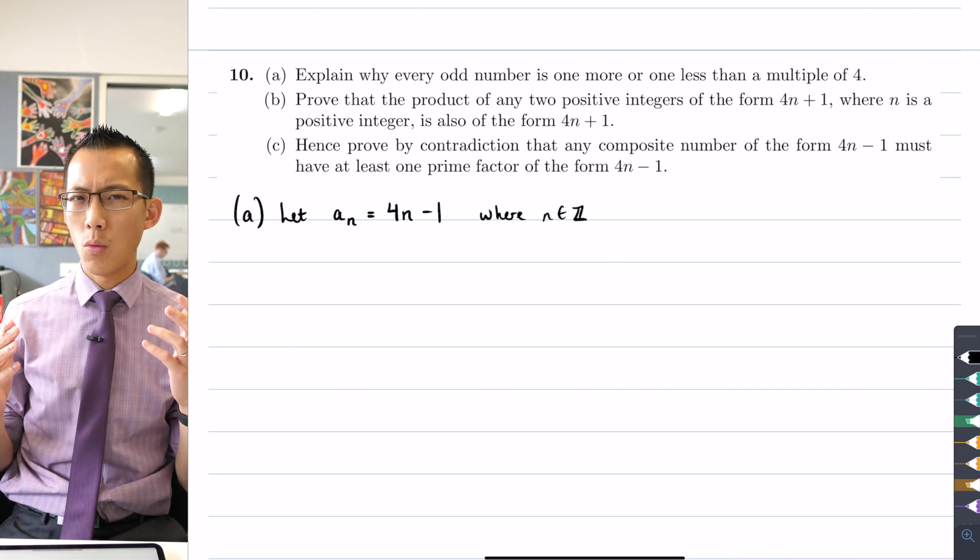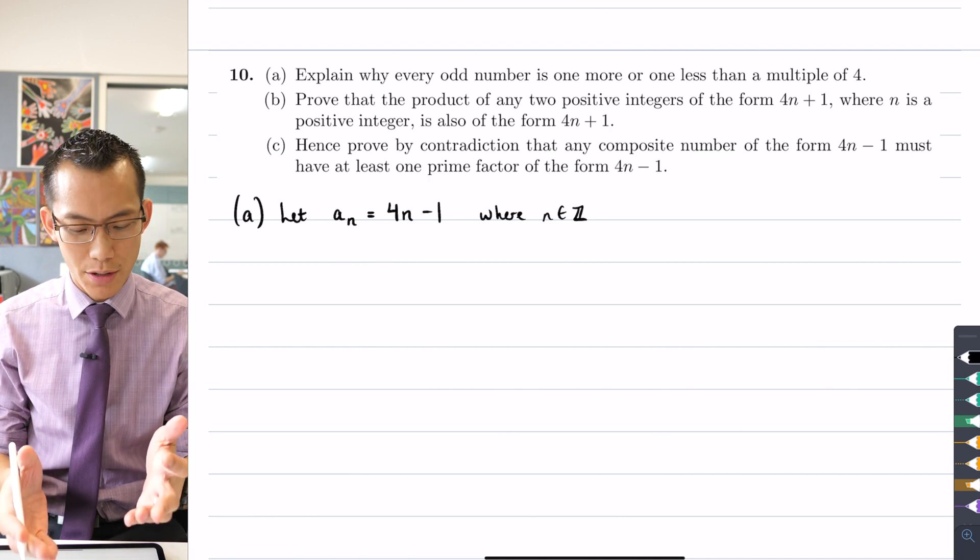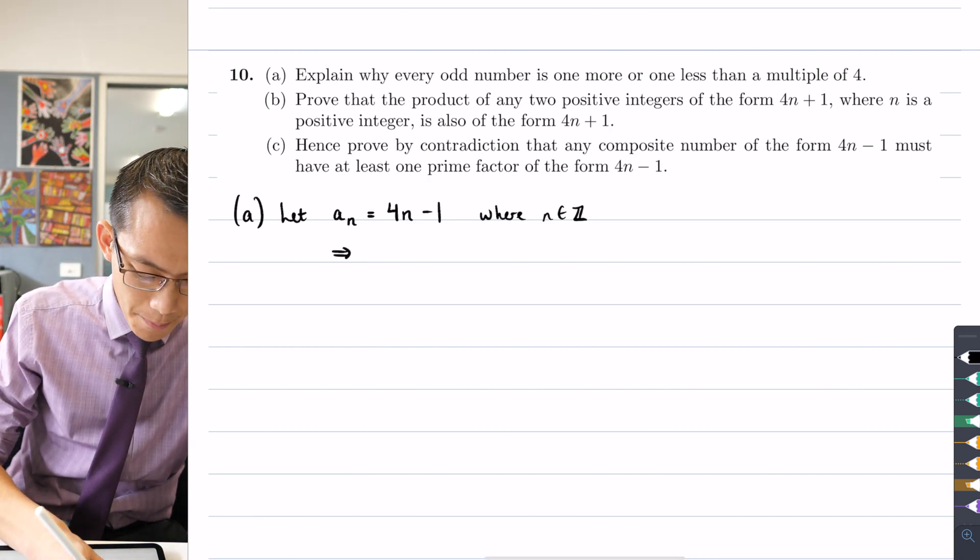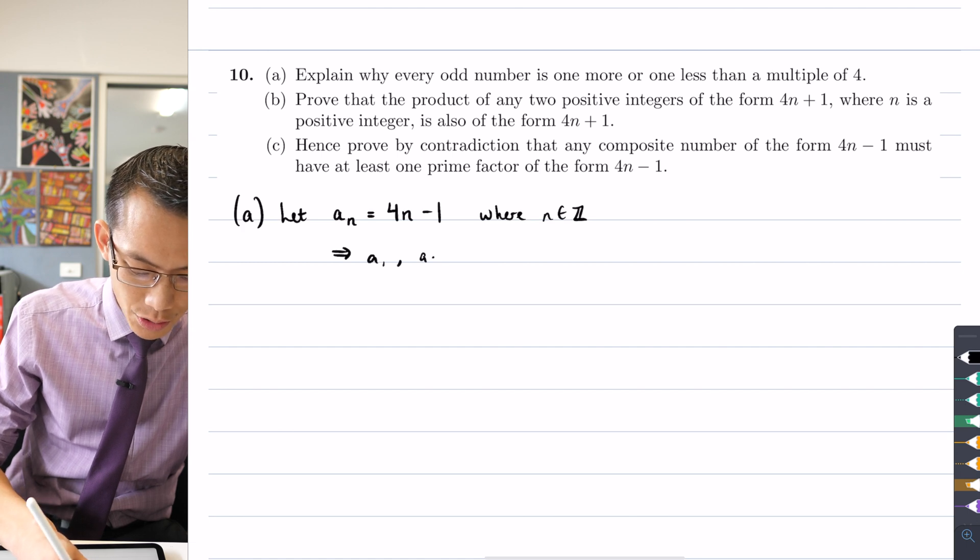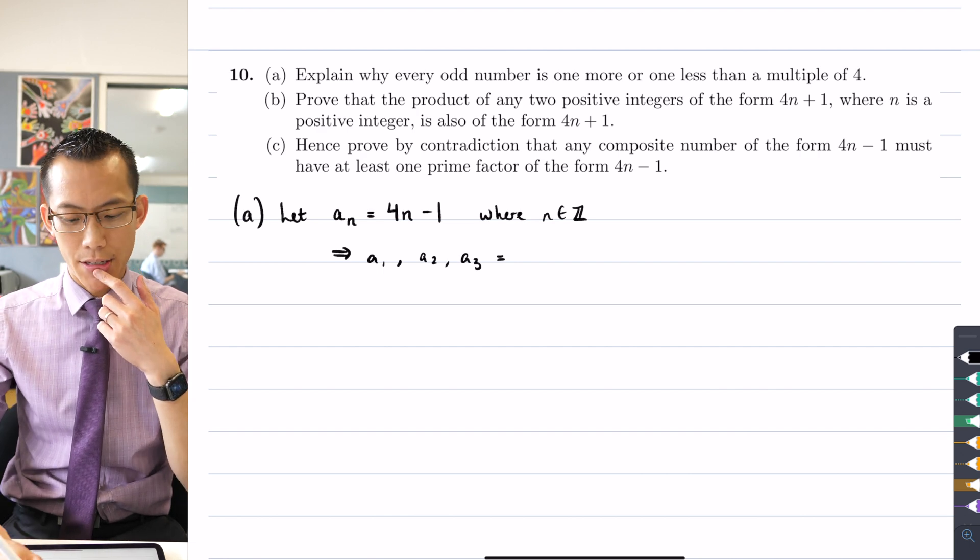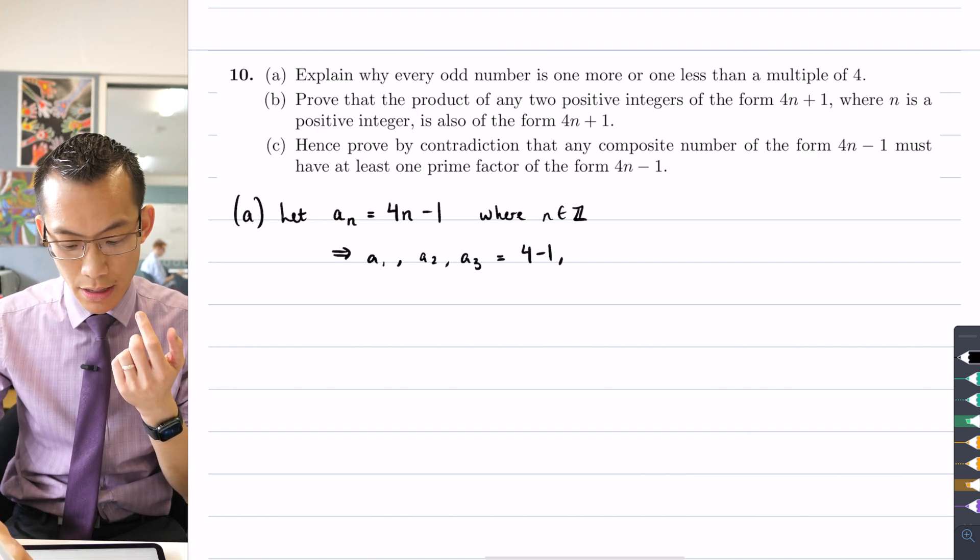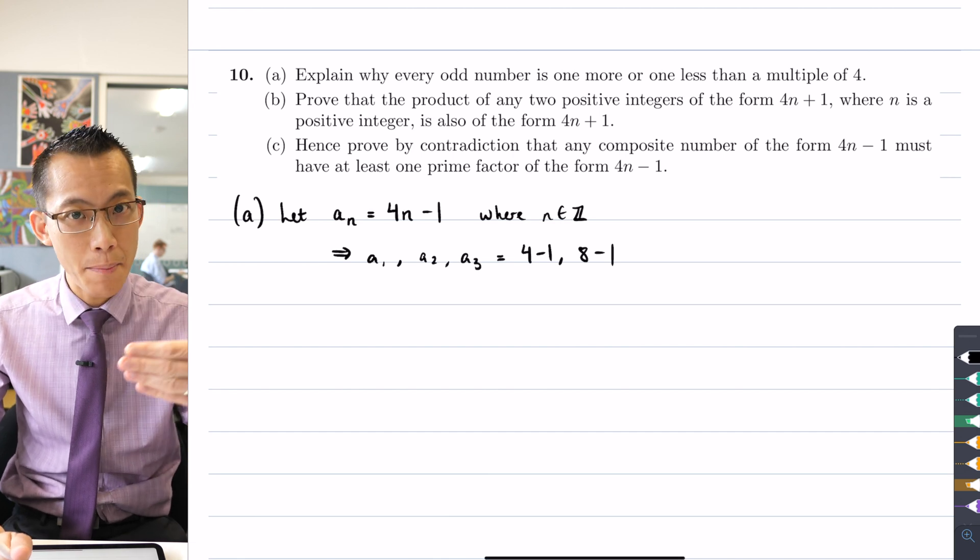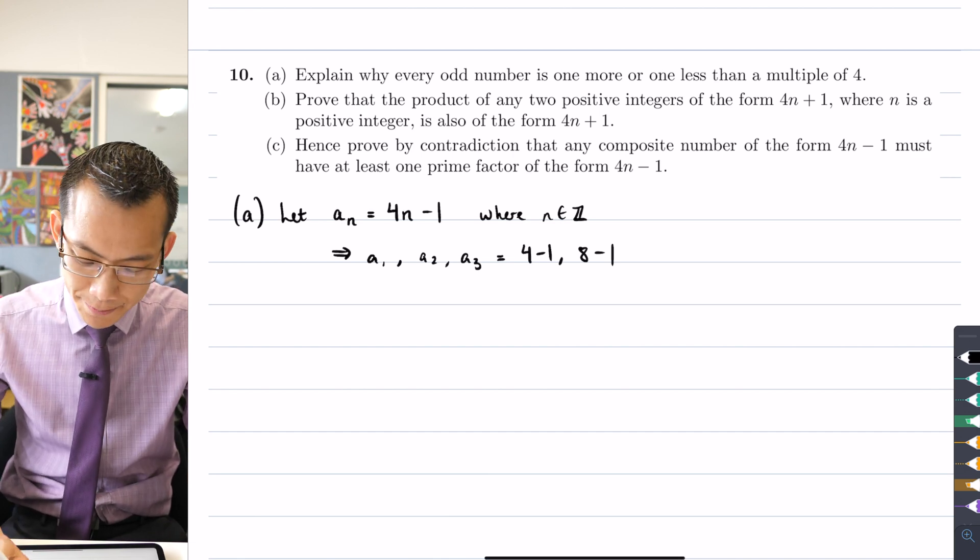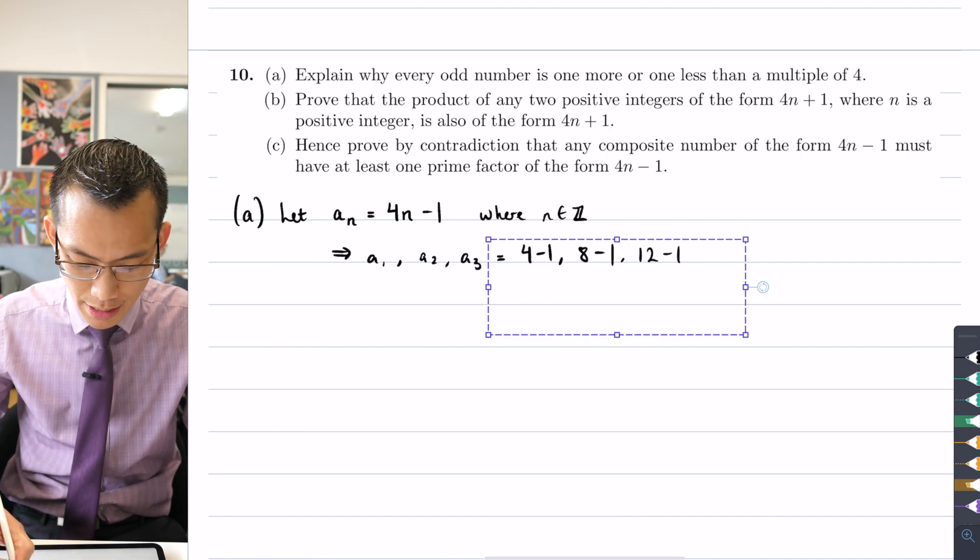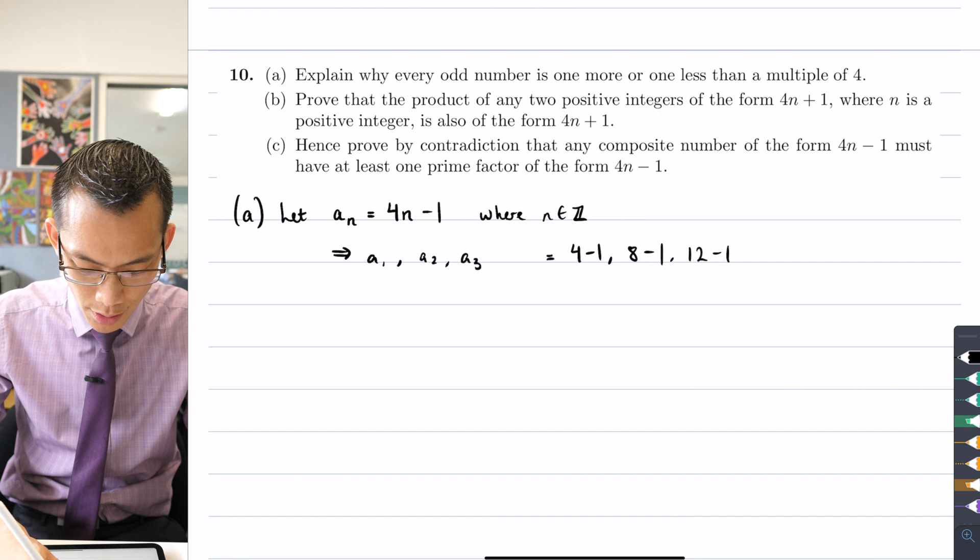Well, this implies that A1, A2, A3 are going to be something like four take away one, and then eight take away one. This is me incrementing up for the integer values of N, and the next one will be 12 minus one and so on. I should have said this sequence does go on forever, dot dot dot.